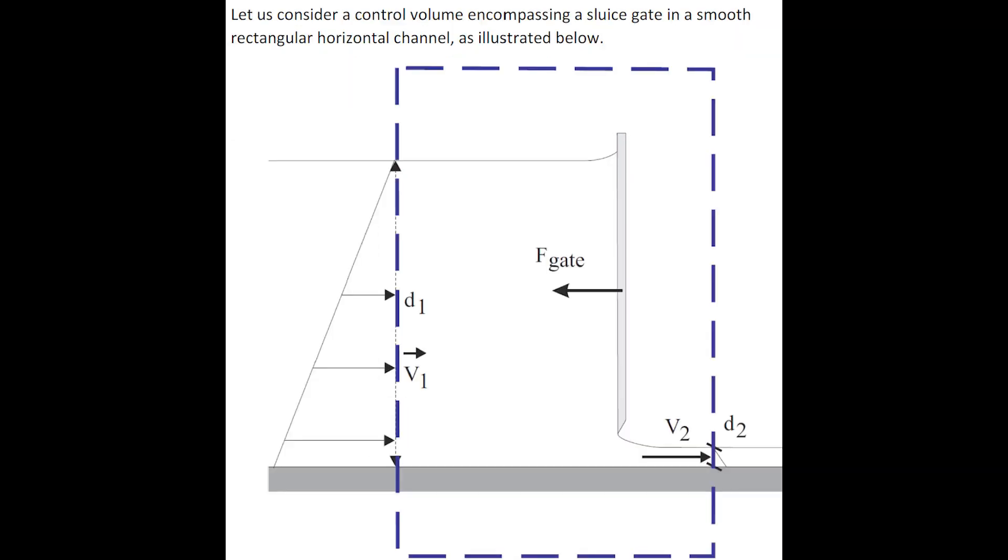Let us consider the control volume encompassing the sluice gate in a smooth, rectangular, horizontal channel.